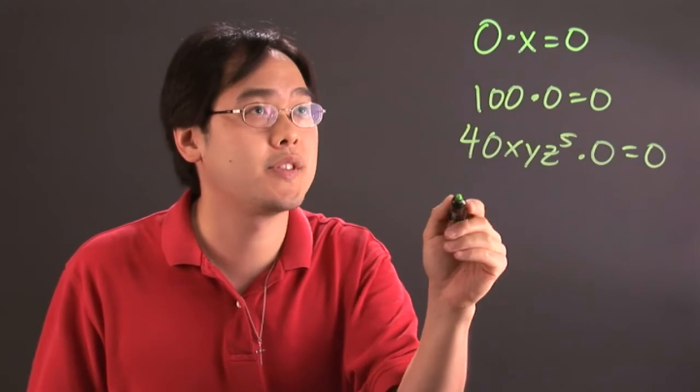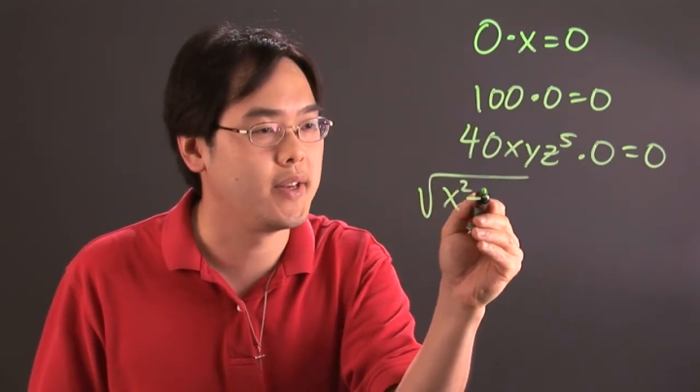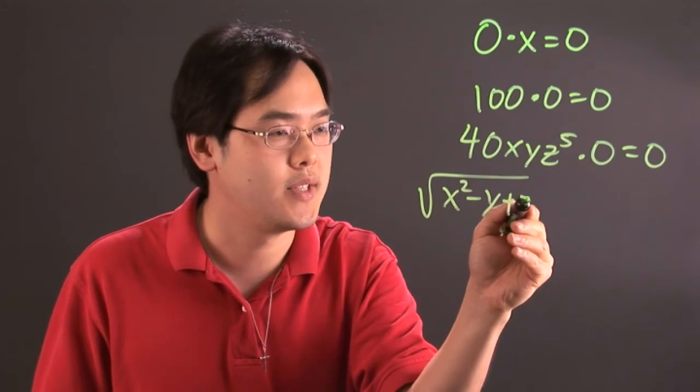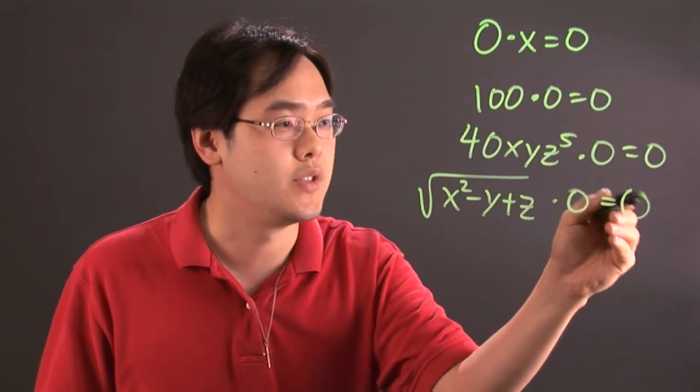And if you have something kind of creepy looking like square root of x squared minus y plus z times zero, that's going to give you zero.